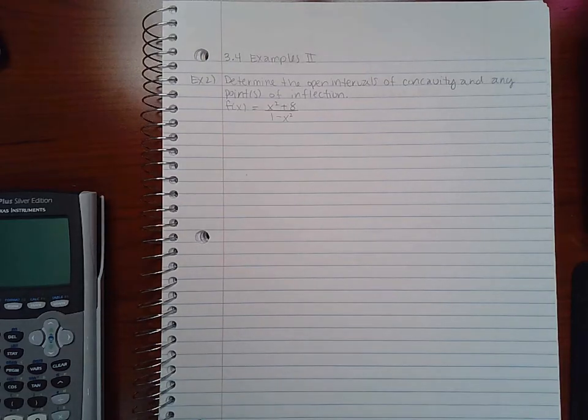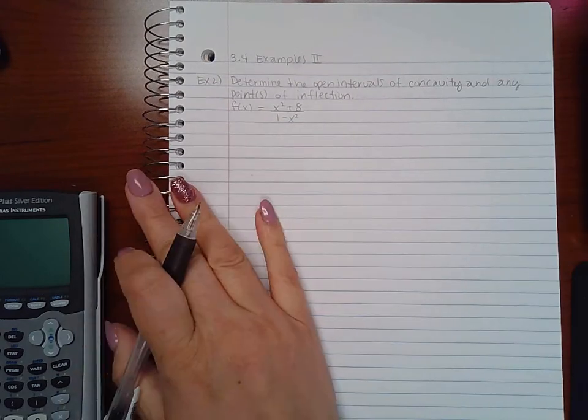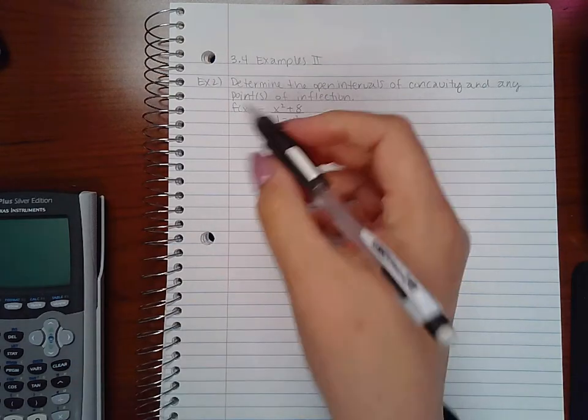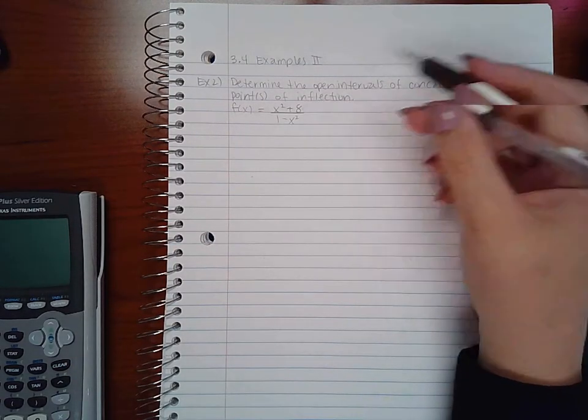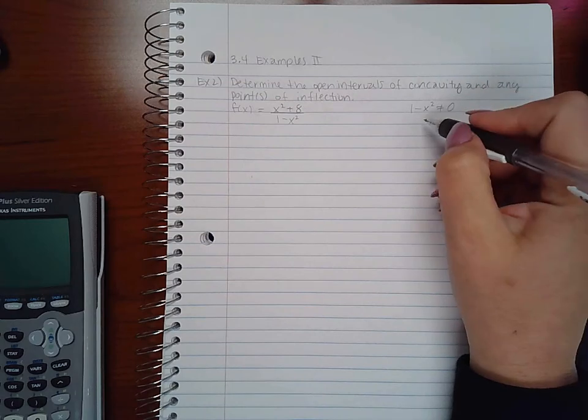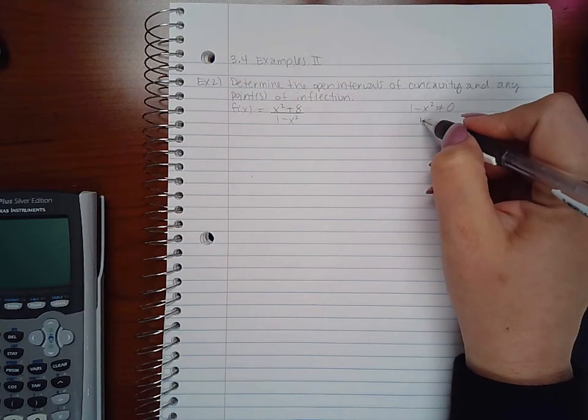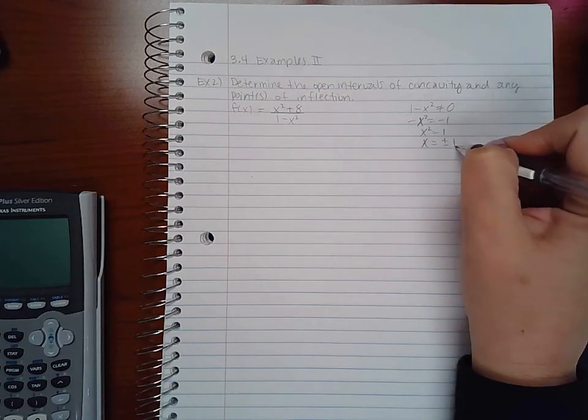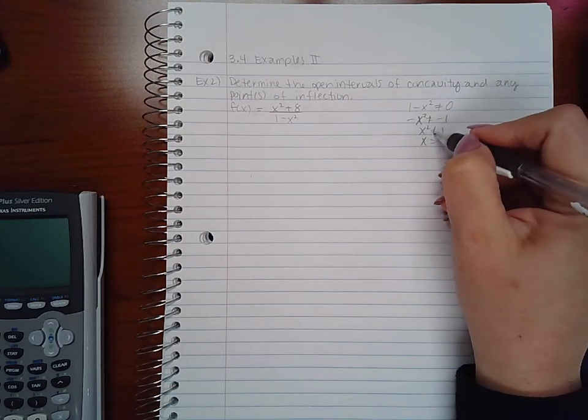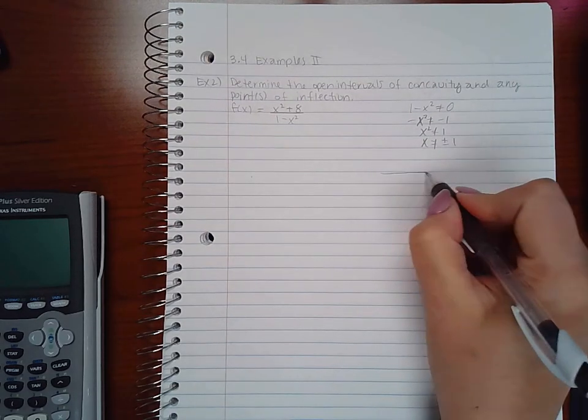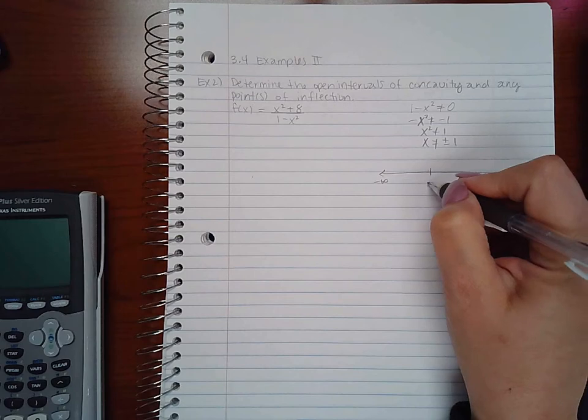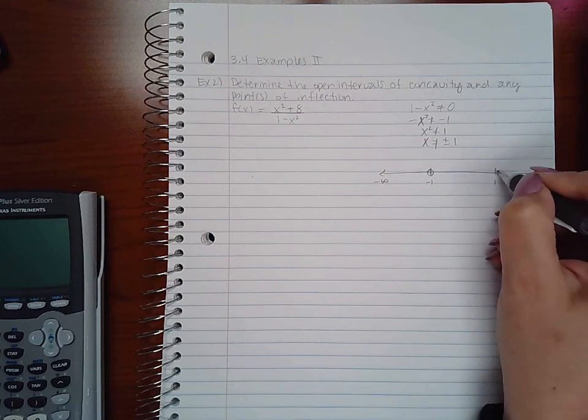This is a second problem in the concavity section. For example 2, it says determine the open intervals of concavity and any points of inflection. For my domain, my denominator can never equal zero, otherwise the whole function is undefined. So I'm going to solve this really quick and I get x cannot equal plus or minus 1, which means my number line has got some holes in it—a hole here at negative 1 and a hole here at positive 1.